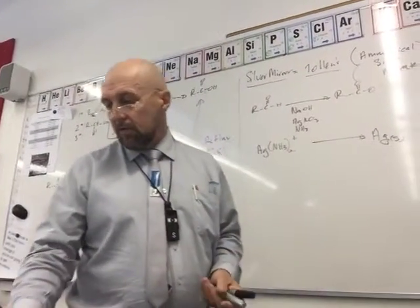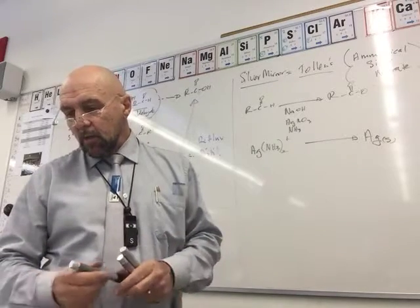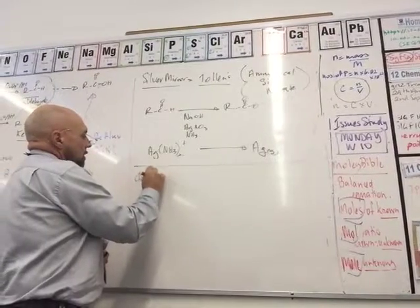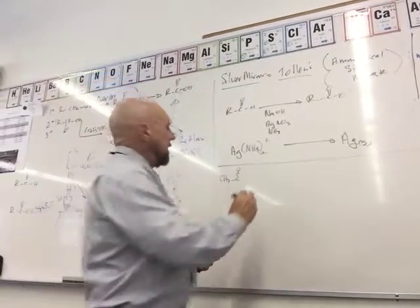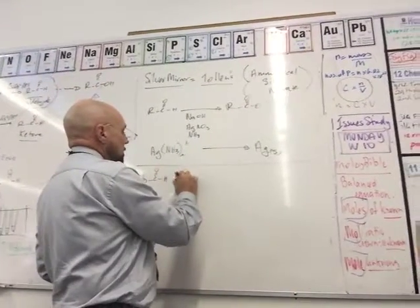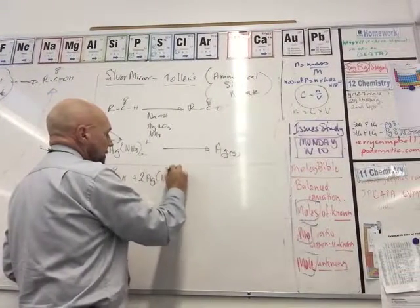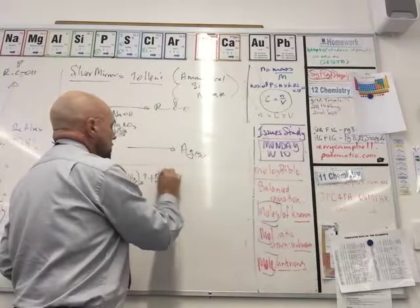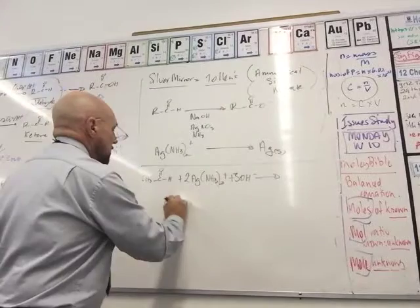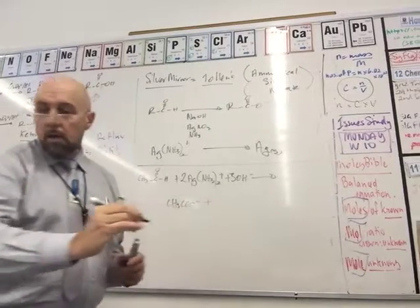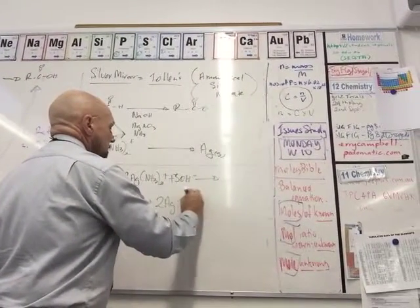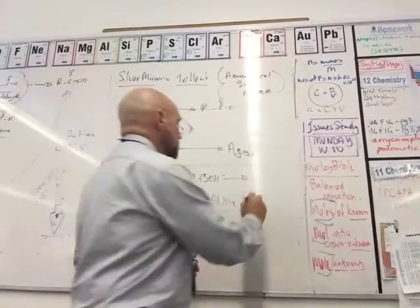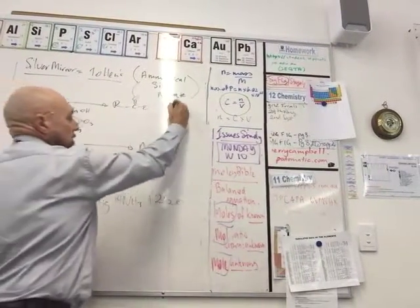The overall reaction for the Tollens test — not required for the course but useful to know. For ethanal: RCHO + 2[Ag(NH3)2]+ + 3OH⁻ → acetate + 2Ag + 4NH3 + 2H2O. This is what you need to know for the exam — the full equation. Some tutorial questions ask for this full equation.